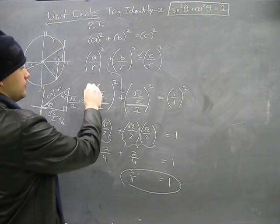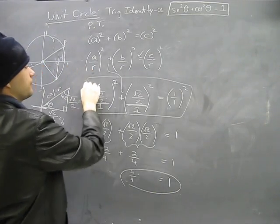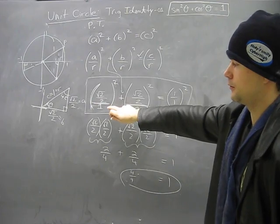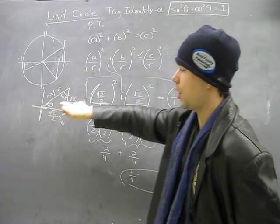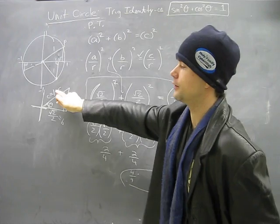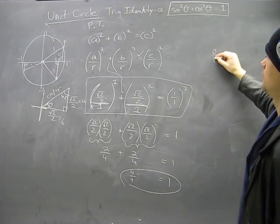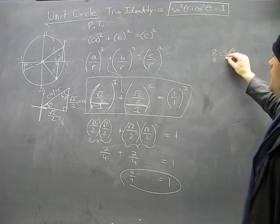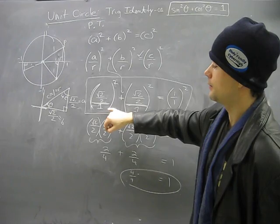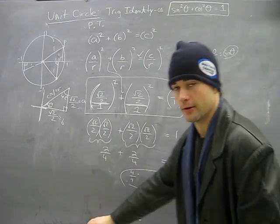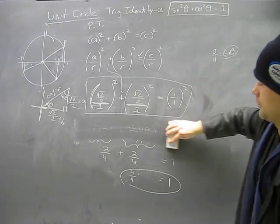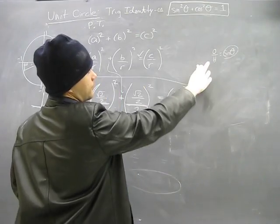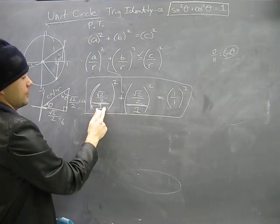Now, because we're dealing with √2/2 over 1 — that's opposite over hypotenuse. That is sine of theta. So now that we've shown the math works, let's replace the numbers with symbolic notation. Opposite over hypotenuse is what we have here.